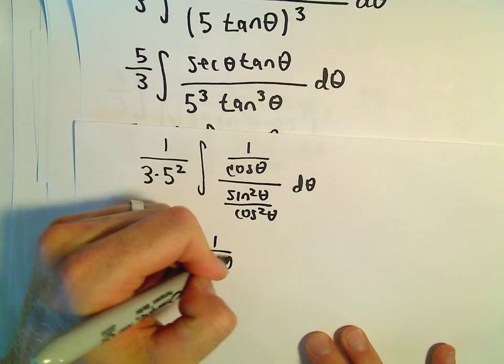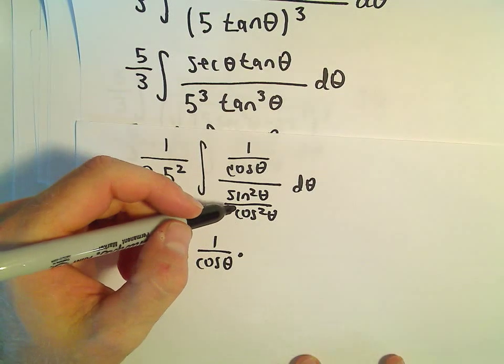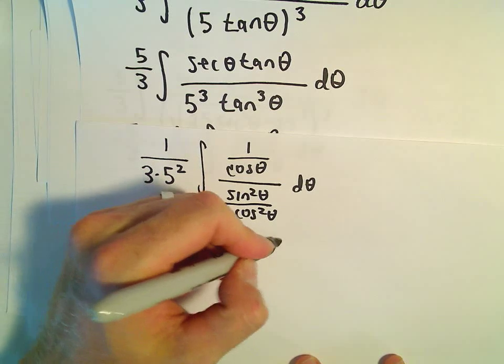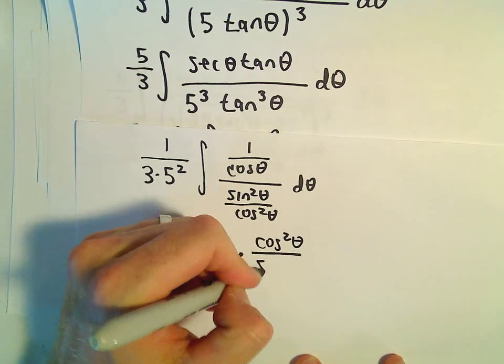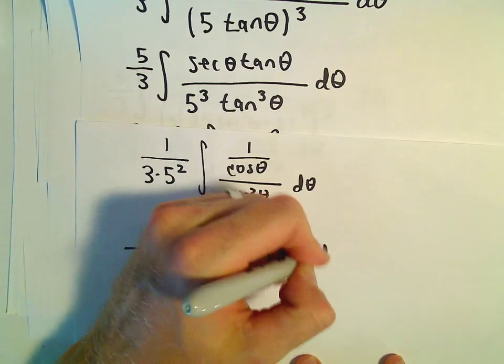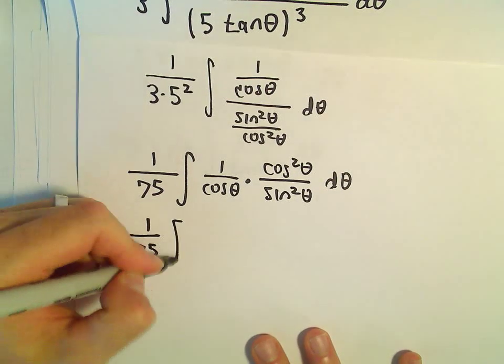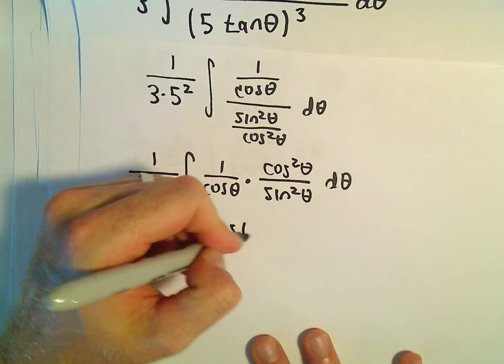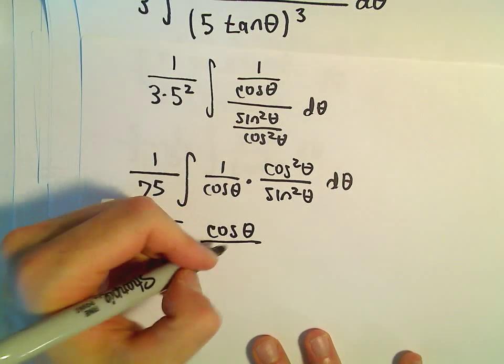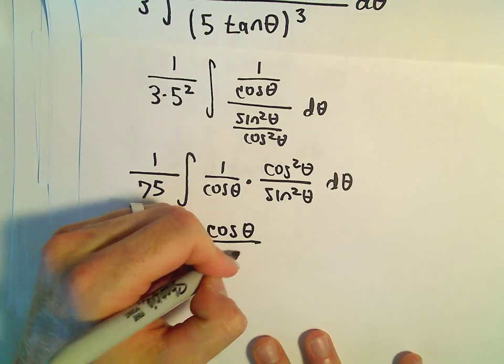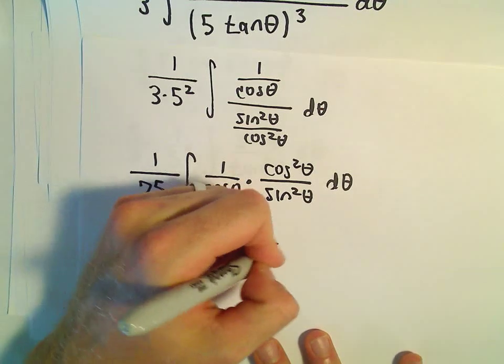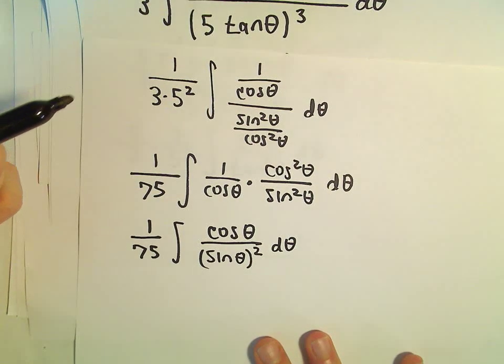So we've got 1 over cosine theta. It looks like, I guess if we flip and multiply, we would have cosine squared theta over sine squared theta d theta. And this to me is starting to look better because we would have a cosine theta left over in the numerator and just sine squared left over in the denominator.